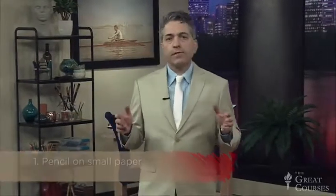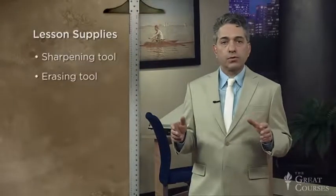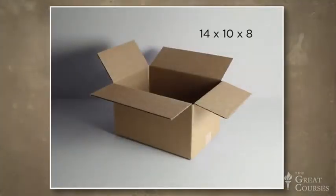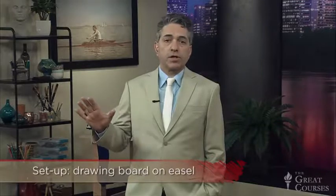As part of this lecture we'll be making two drawings. The first with pencil on small paper, the second with charcoal on 18 by 24 inch paper. You'll also need your sharpening and erasing tools, viewfinder and grid. We'll be drawing a cardboard box. The one I've used in the examples is 14 by 10 by 8 inches. To get a similar view, you'll want to be standing up looking down at the box. It's likely best to set up with your drawing board on your easel.